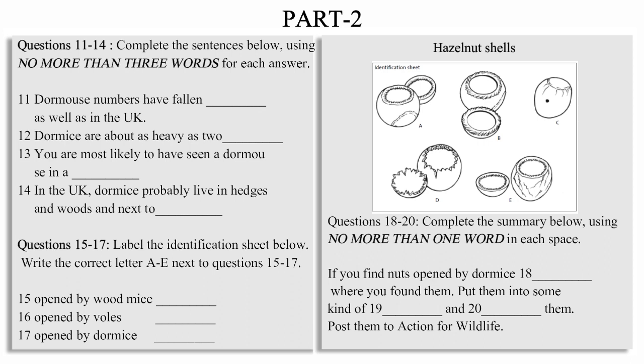If you do find any nuts which you think have been opened by dormice, you need to record their location as precisely as possible. You can use the grid references on a map, or you can sketch your own map. But if you do, be sure to include landmarks or road names. It's very important that we know exactly where the shells came from. Then, put the nut shells in a small container. Any kind will do. A film box or a matchbox. Anything that prevents them from being crushed in the post. And then, finally, give them a label, just your name and contact details, and send them to Action for Wildlife.